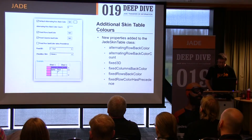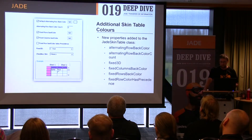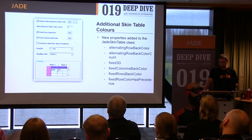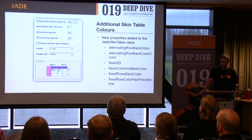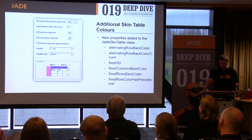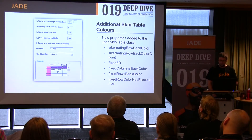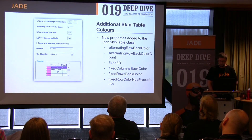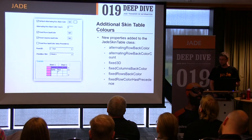The jade skin table class has the following additional properties to control the drawing of table skins: alternating row back color, which specifies its color; alternating row back color count, which specifies that every nth row is colored; fixed 3D, which specifies how the fixed cells are drawn — either as 3D elements, not, or inheriting the table's fixed 3D property; the fixed column's back color and fixed row's back color, which are self-explanatory; and the fixed row color has precedence property, which controls how cells are drawn that are in both a fixed row and fixed column. When true, the fixed row's back color takes precedence; when false, the fixed column's back color is used.